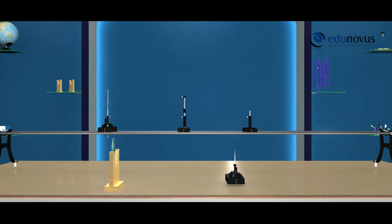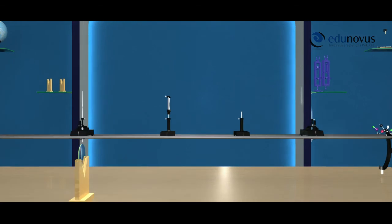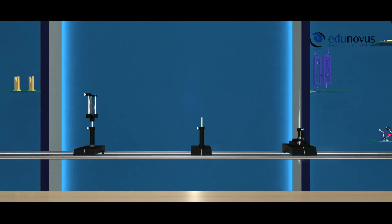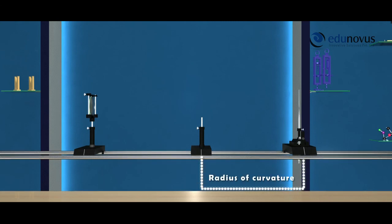If we remove the convex mirror, the light rays from the object needle will meet at the center of curvature of the convex mirror. To locate the center of curvature, we mount another upright known as the image needle. Adjust the position of the upright and you will observe an inverted image of the object needle on the tip of the image needle. The distance between the convex mirror and the tip of the needle gives us the radius of curvature of the convex mirror.